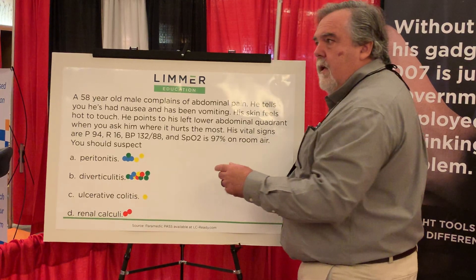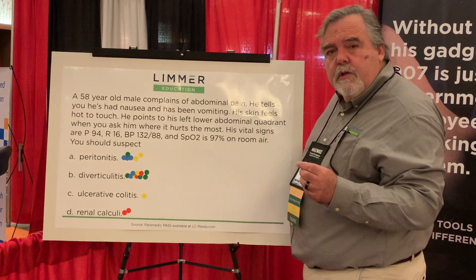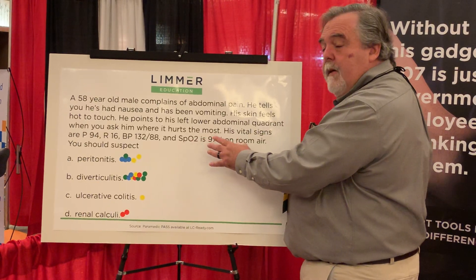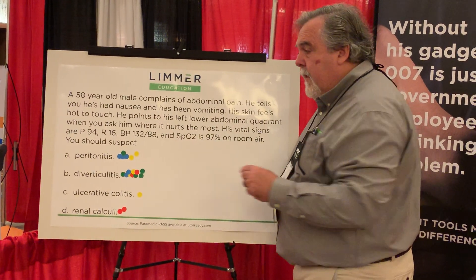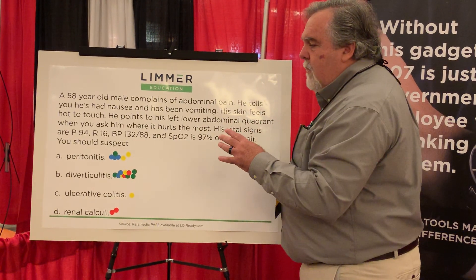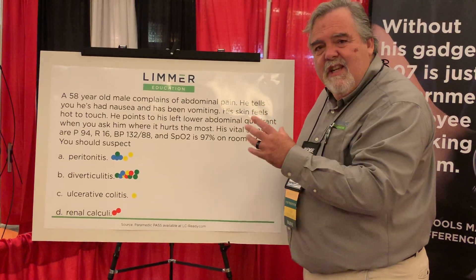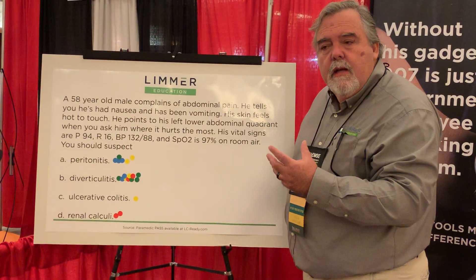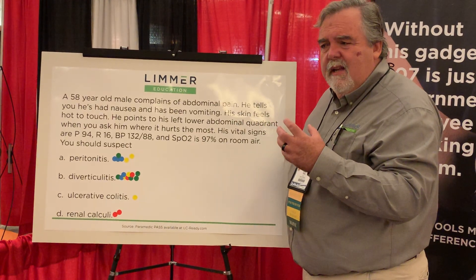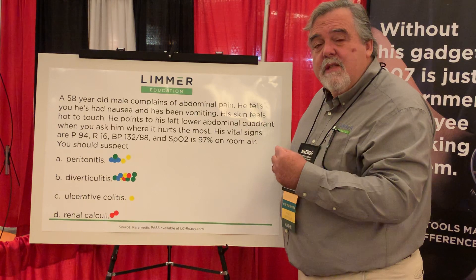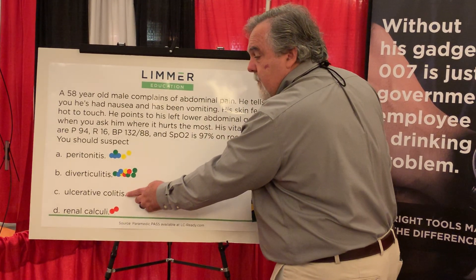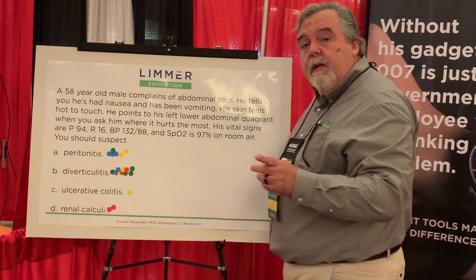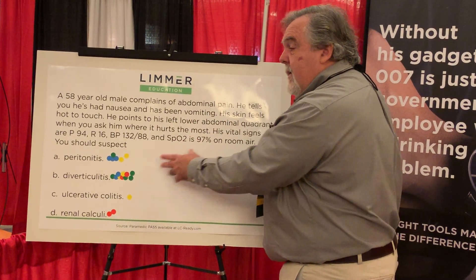That leaves us with diverticulitis and peritonitis. Diverticulitis was the most chosen and it's correct. We have a patient who is in a lot of discomfort but seems hemodynamically and generally okay, and the hot skin tends to fit that. Peritonitis, the next most chosen, would generally have a little bit more pain and a sicker presentation. Think about peritonitis — what irritates the peritoneum? Blood? Intestinal or stomach contents? Those things cause significant pain, and there's often an underlying condition making the patient very sick. So having ruled out renal calculi, ulcerative colitis, and peritonitis as being probably the sickest presentation — which doesn't match this patient — we're left with diverticulitis, which does match the majority of these categories and is the best answer for this question.